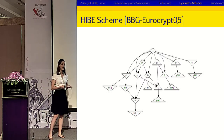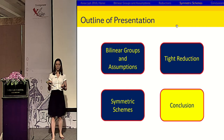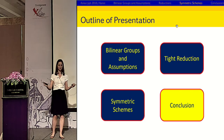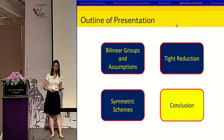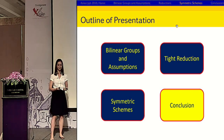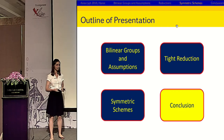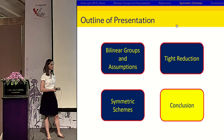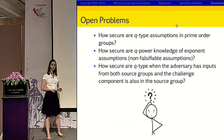Another example of a scheme we cover is an identity-based key encapsulation mechanism. We also cover an attribute-based encryption scheme — a selectively secure one, not a fully secure one. And we cover a hierarchical identity-based encryption scheme.